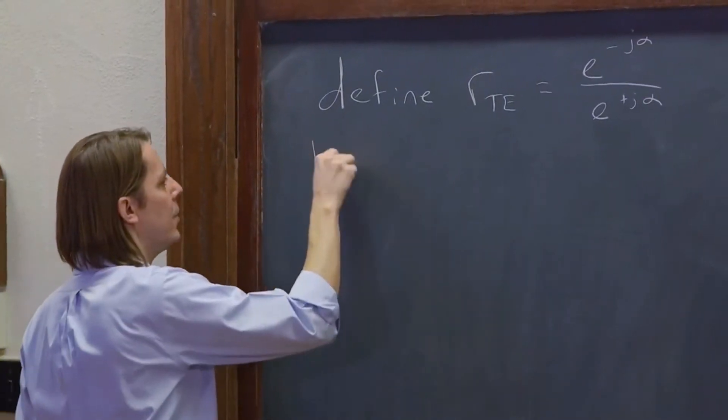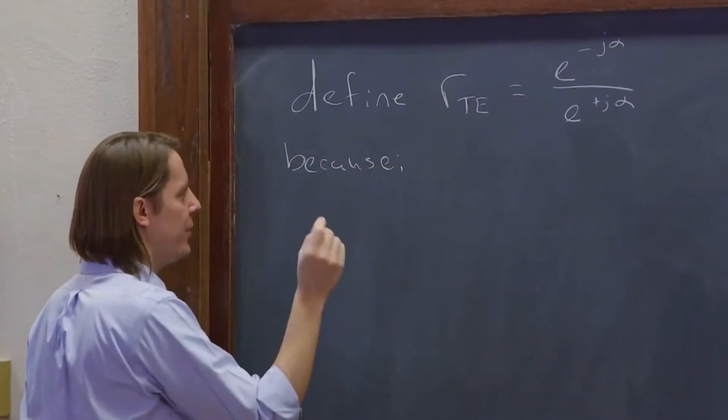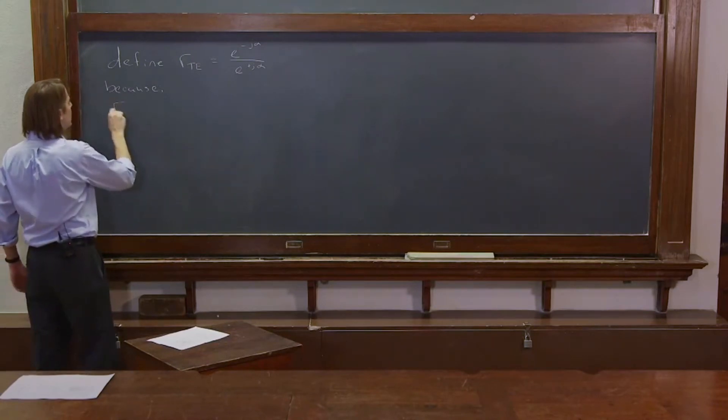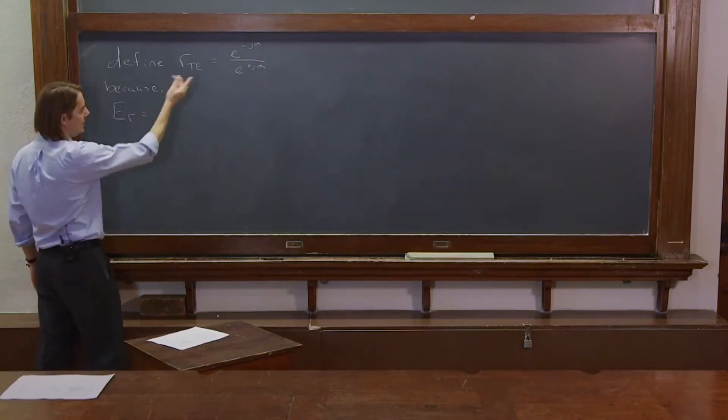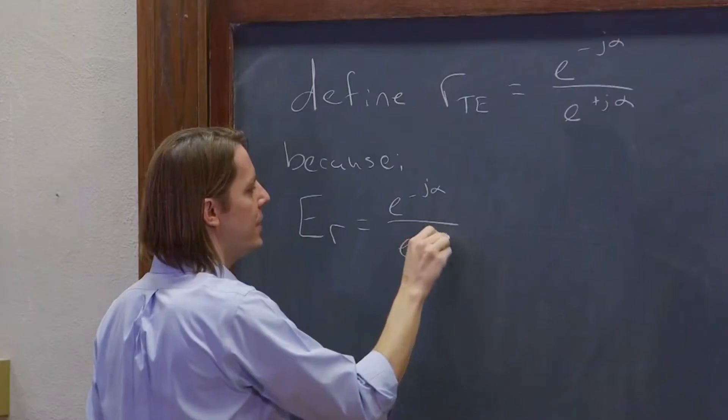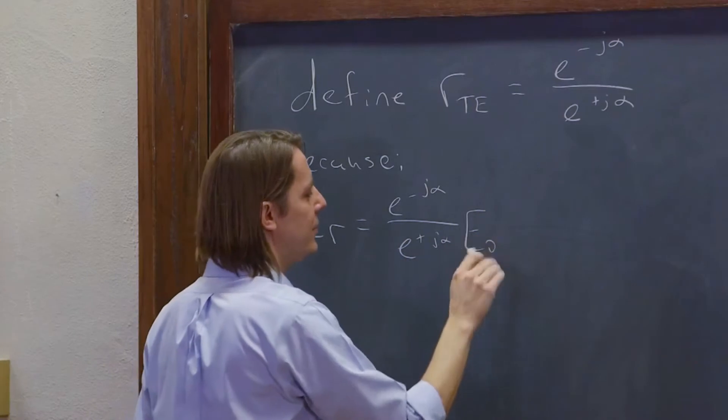Because, here's the reason, if we think about what that really means, that's really telling you that the ER field is this thing: e to the minus j alpha over e to the plus j alpha times the incident field.